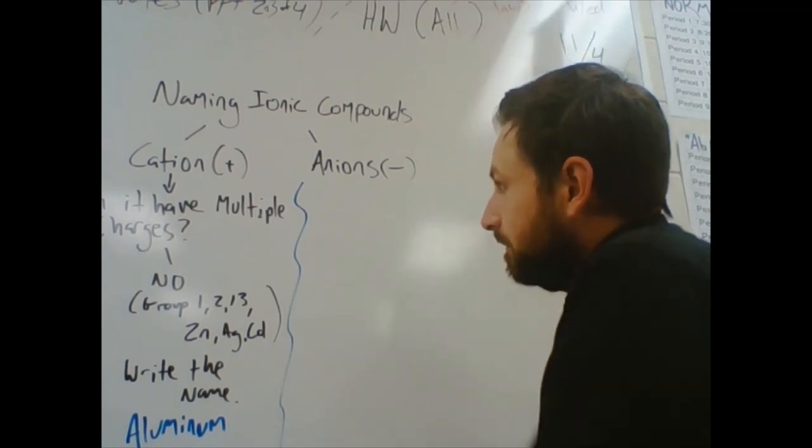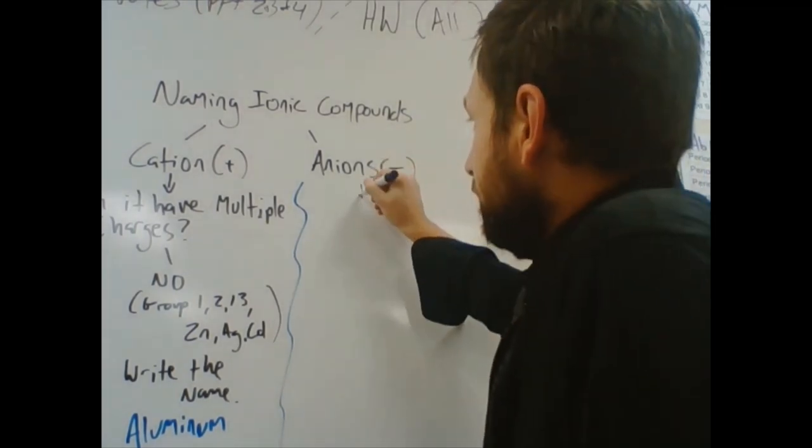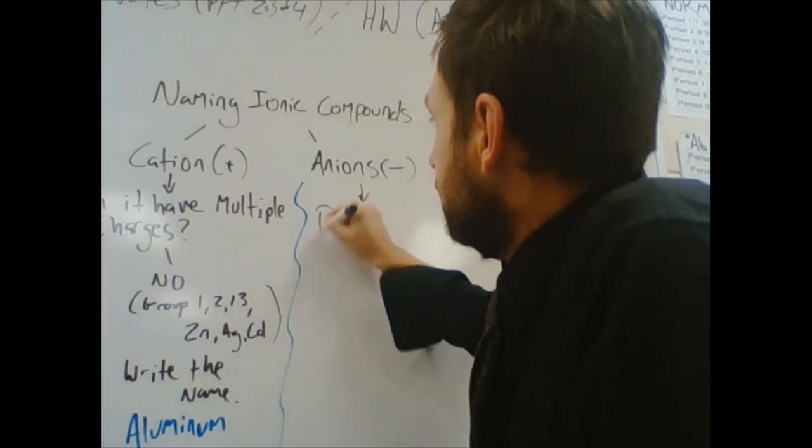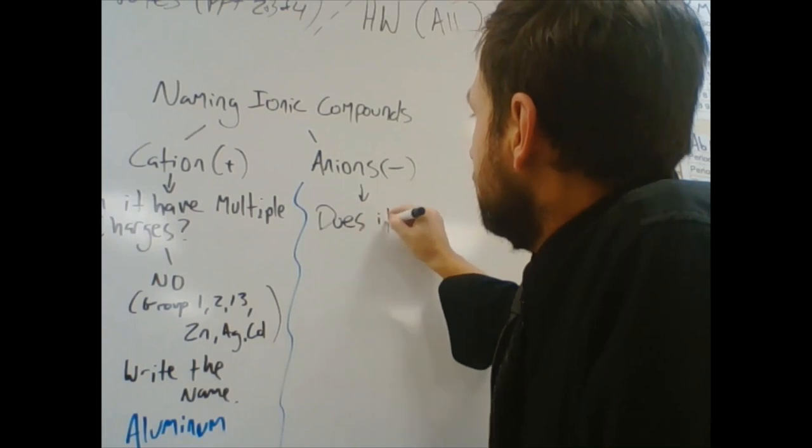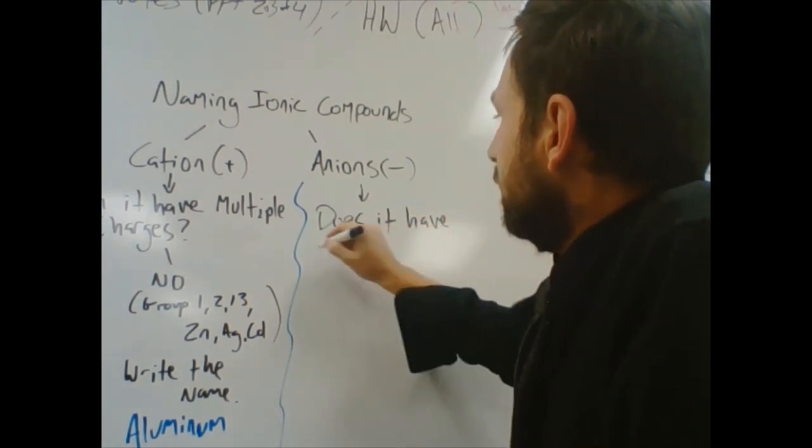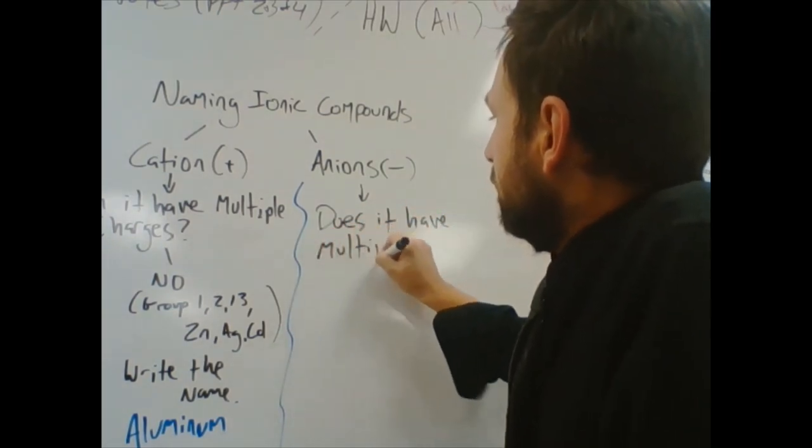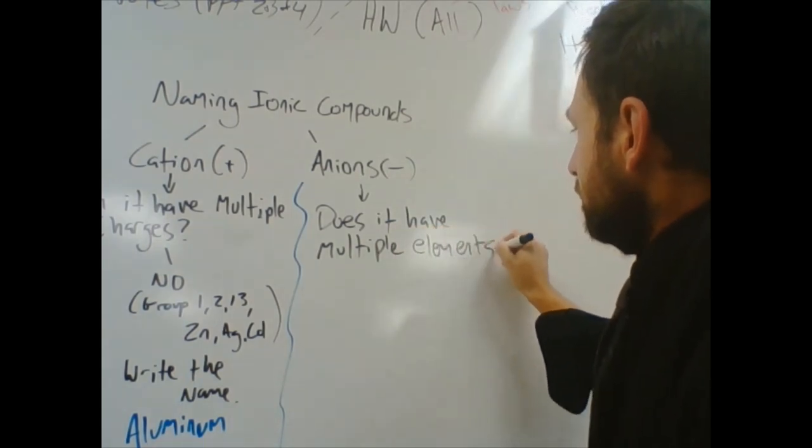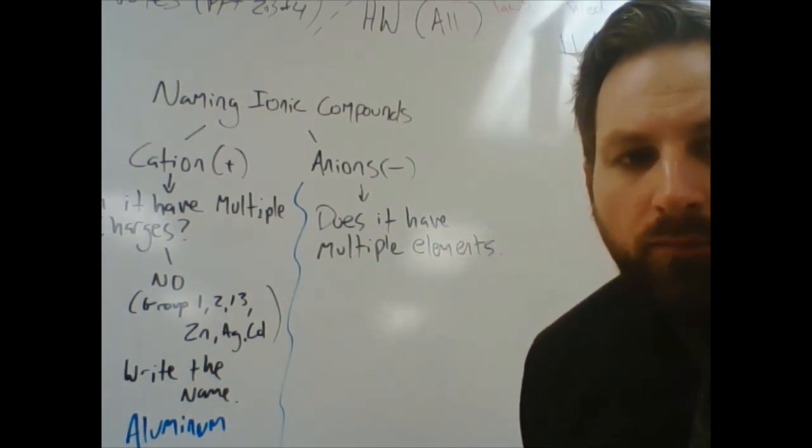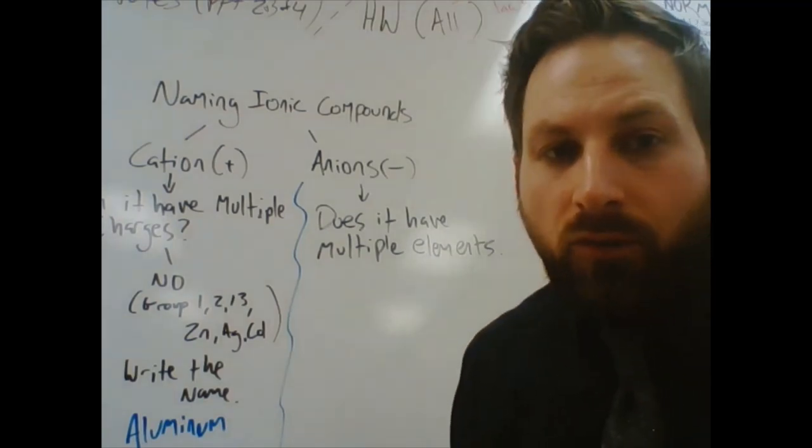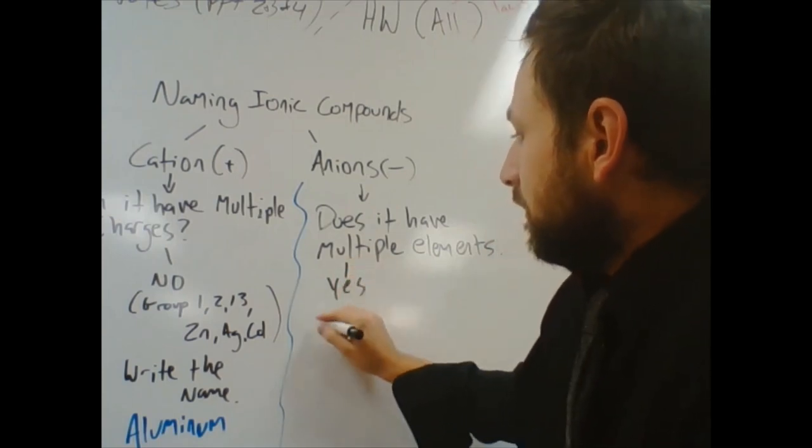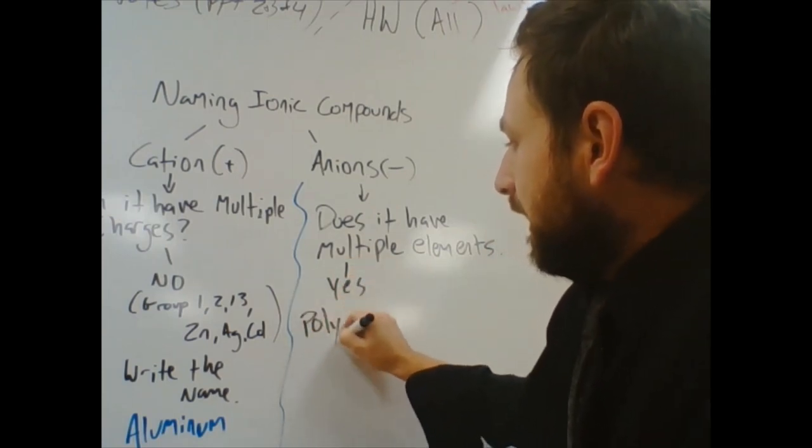A question can be, does it have multiple elements? Multiple elements, meaning it has more than one type of atom in it. So, if the answer is yes, you have a polyatomic ion.